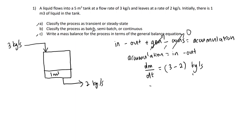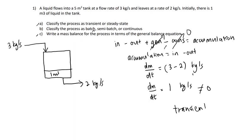So we have dm/dt equal to 1 kg per second. Looking at the mass balance equation of this process, dm/dt is not equal to zero. Thus, it is a transient process — it is not a steady state process.